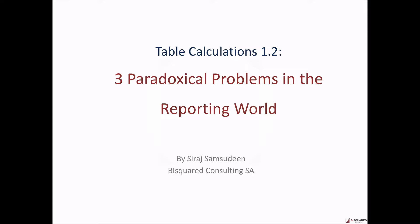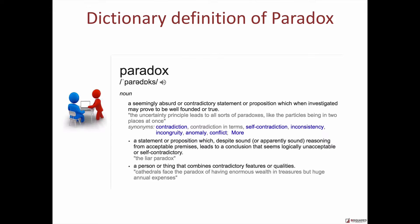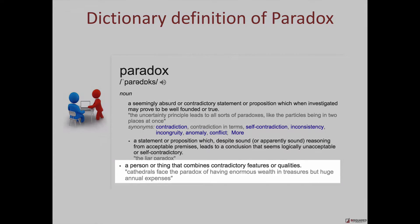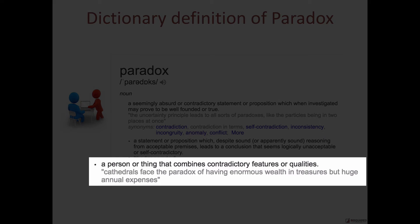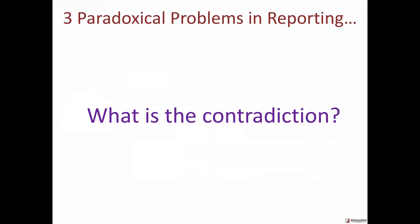In this video, let's talk about the three paradoxical problems in the reporting world. Before we get started, let's define what a paradox is. Here is the dictionary definition. Let's focus on the third one: a person or thing that combines contradictory features or qualities. The essence of a paradox is that there's some contradiction. So what's the contradiction here in these three problems?